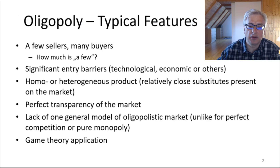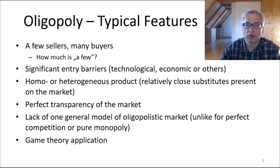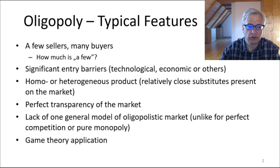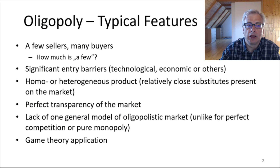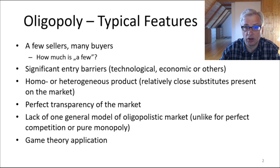First of all, let's start with what oligopolistic market is about. The word oligopoly comes from the Greek word 'oligos', which means 'a few'. So there will be a few sellers with many buyers in such a market. How much is a few, you might ask? Well, it could be two, five, or seven — the main idea is that each of those market participants has a significant influence on the market and others know about their existence.